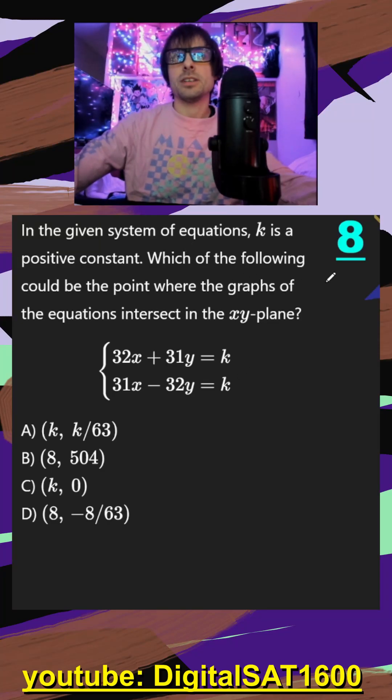In the given system of equations, k is a positive constant. Which of the following could be the point where these graphs intersect in the xy plane?